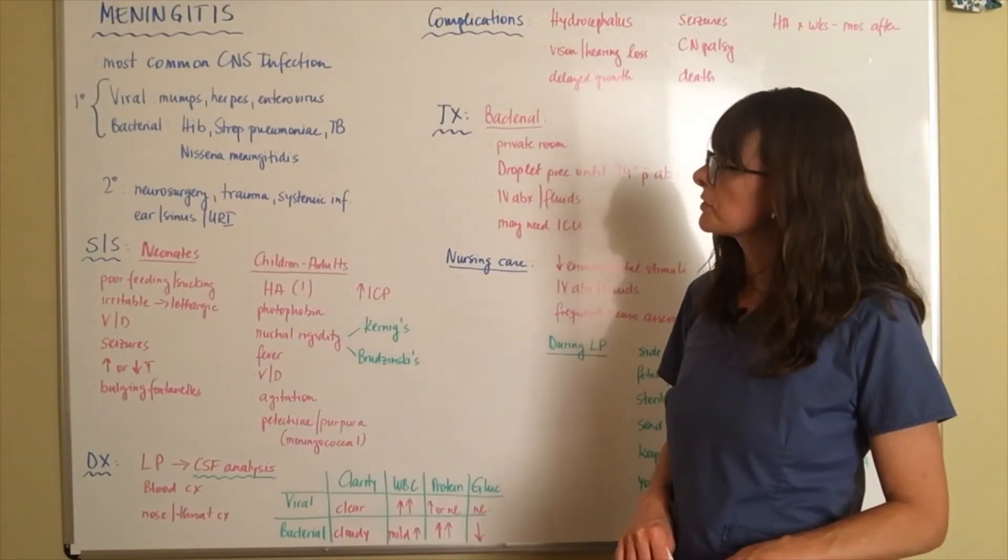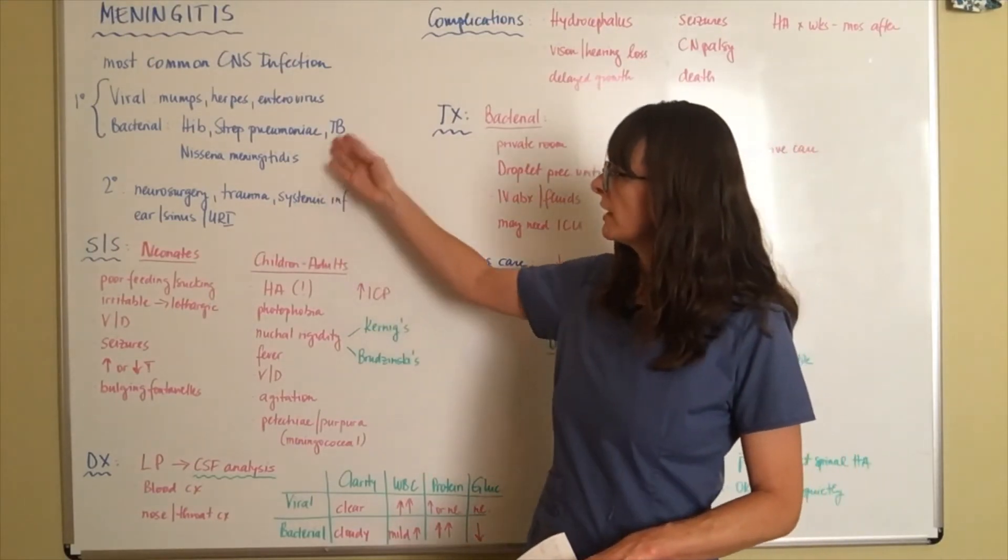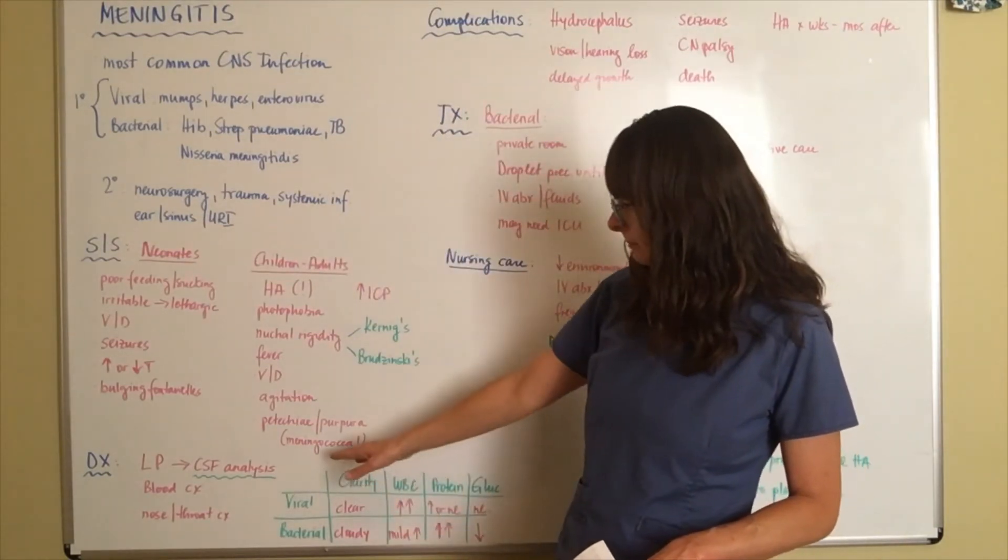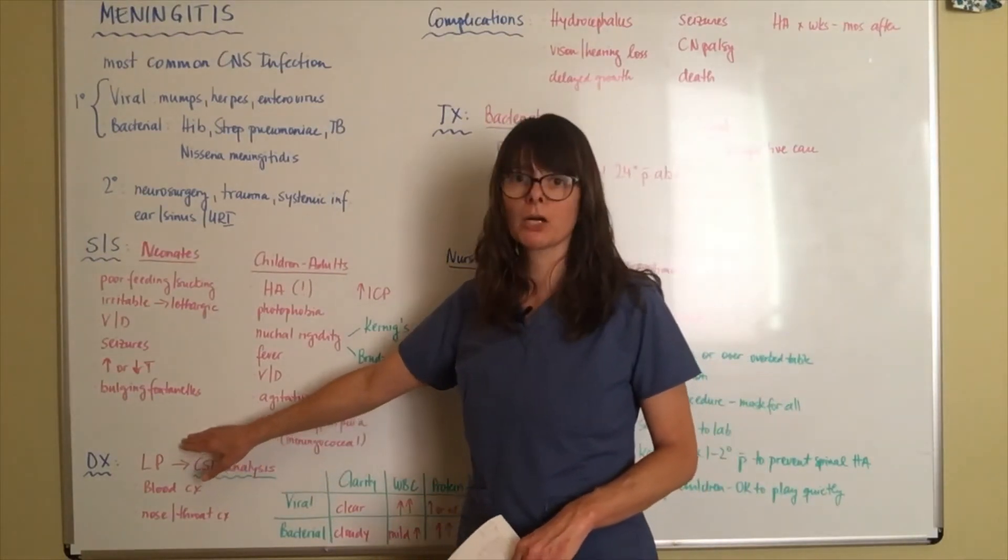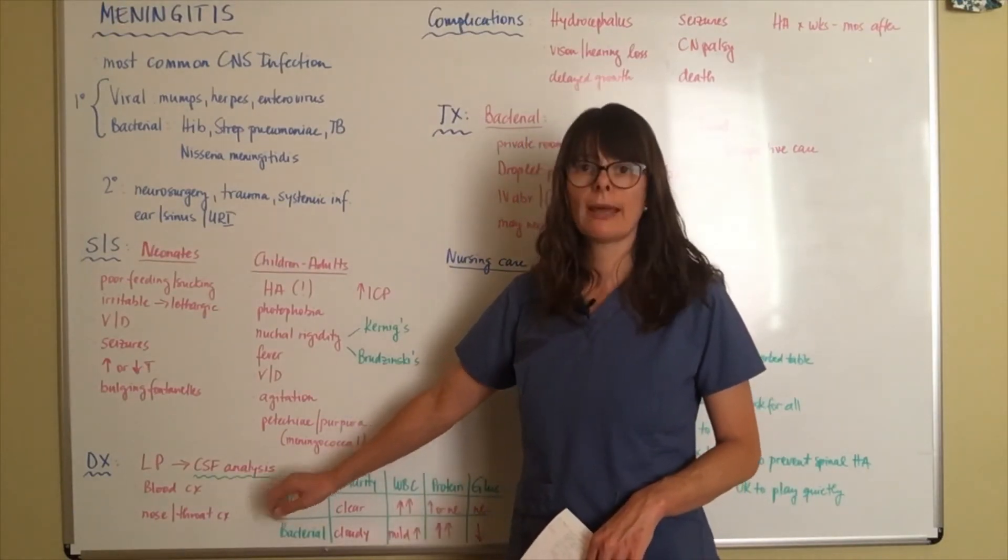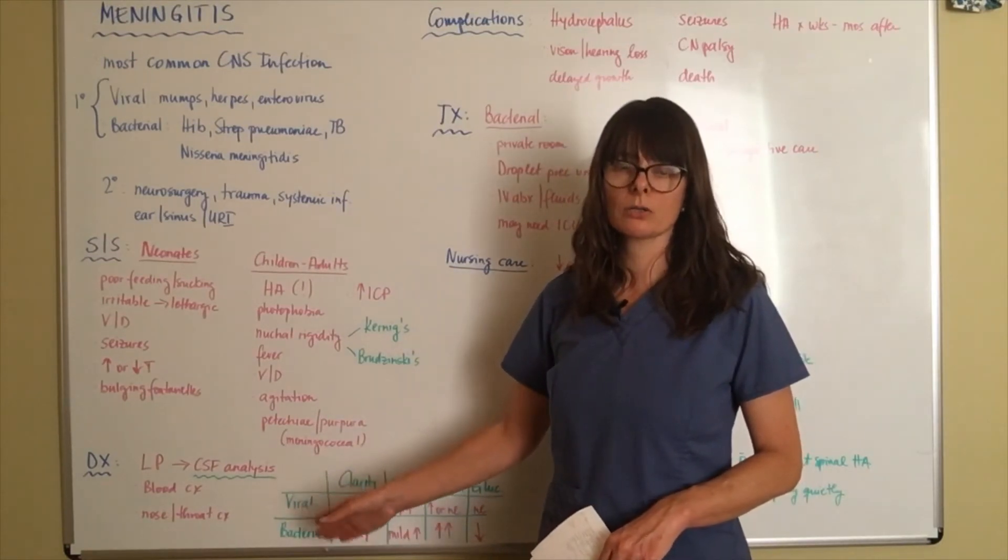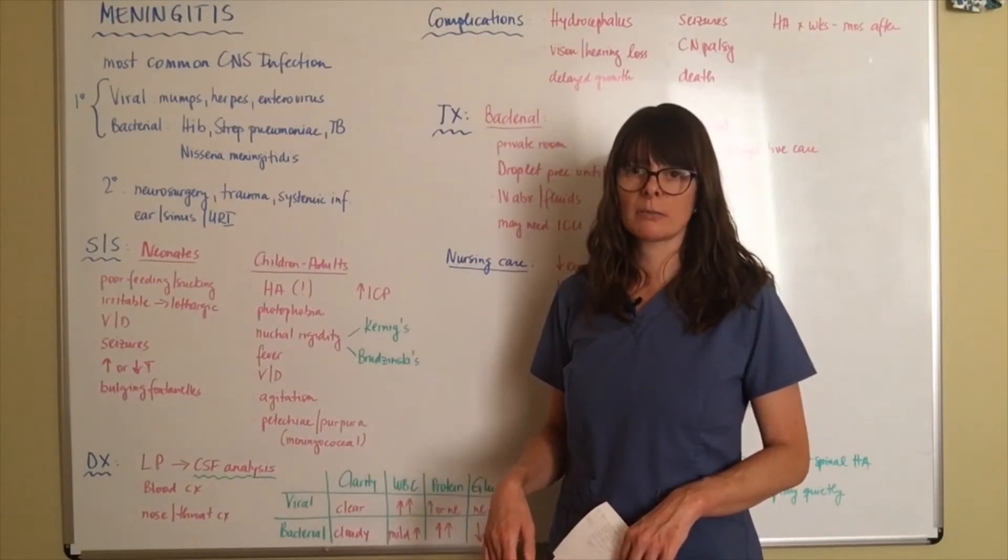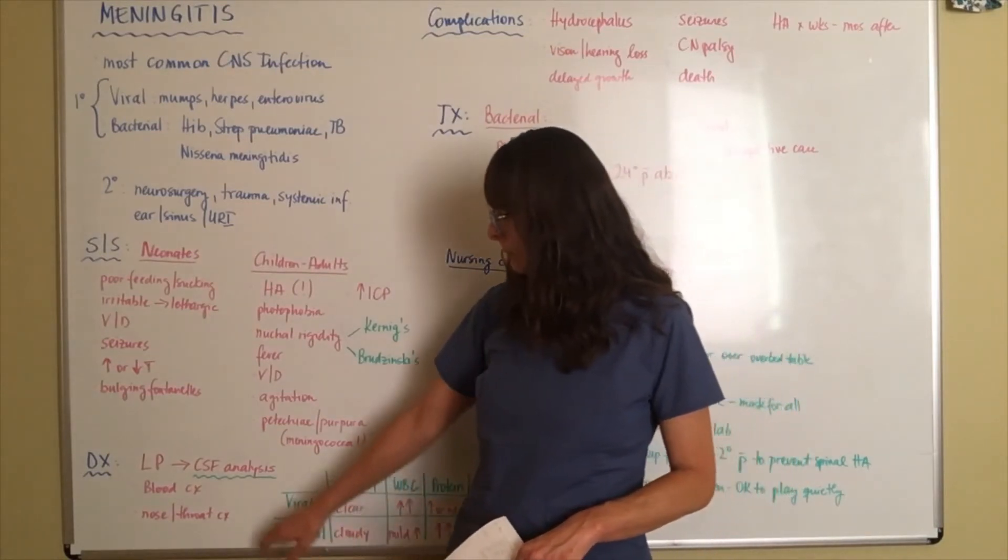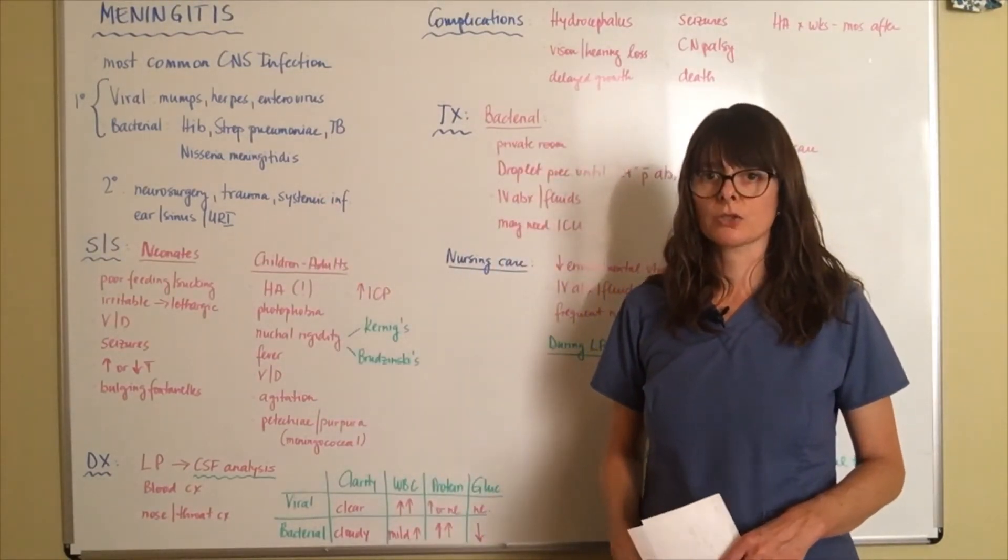How do we diagnose meningitis? If there's a suspicion with any of these signs and symptoms and maybe a history of any of these infections or traumatic interventions to the brain, we need to do a lumbar puncture, also called a spinal tap, and send that cerebrospinal fluid to the lab for analysis. Because this is a significant infection, we're also going to want to draw some blood cultures to see if this has spread systemically or where the infection might come from and what the causative organism is. We might also do a nose or throat culture if there is a suspicion that it might come from the upper respiratory system.